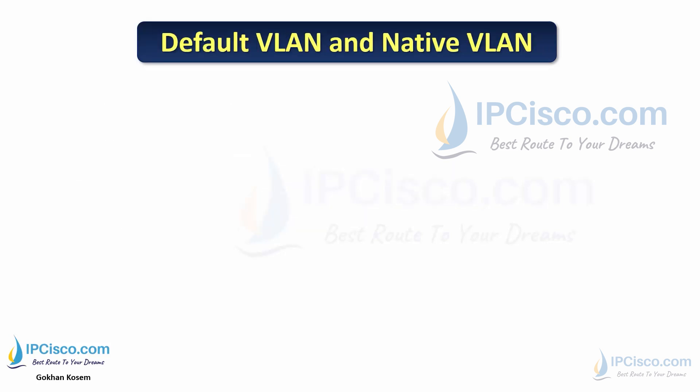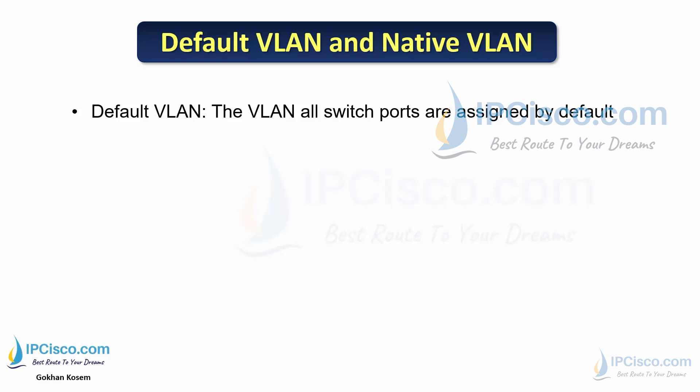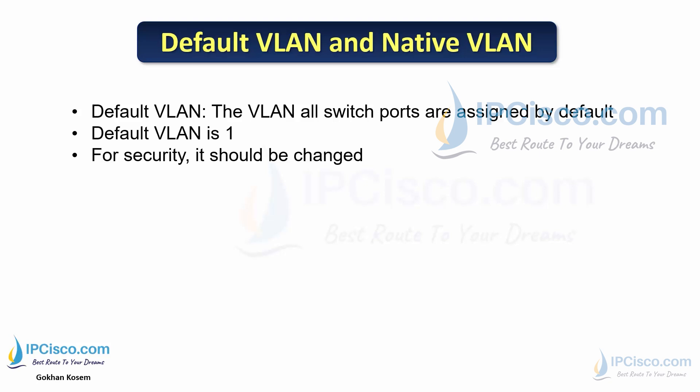There are two different VLANs that are sometimes confused by network engineers: default VLAN and native VLAN. The default VLAN is the VLAN all switch ports are assigned to by default. If you don't do any VLAN configuration, all switch ports are in the default VLAN, which is VLAN 1. After getting a new switch, for security reasons, we should change this to another VLAN.